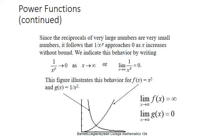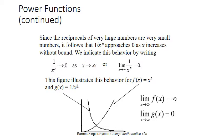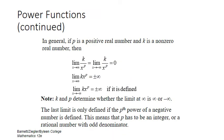As x approaches infinity, 1 over x raised to power p will approach to 0. If x is in the denominator and it is approaching towards infinity, the result is 0. If x is in the numerator, then it will be infinity.